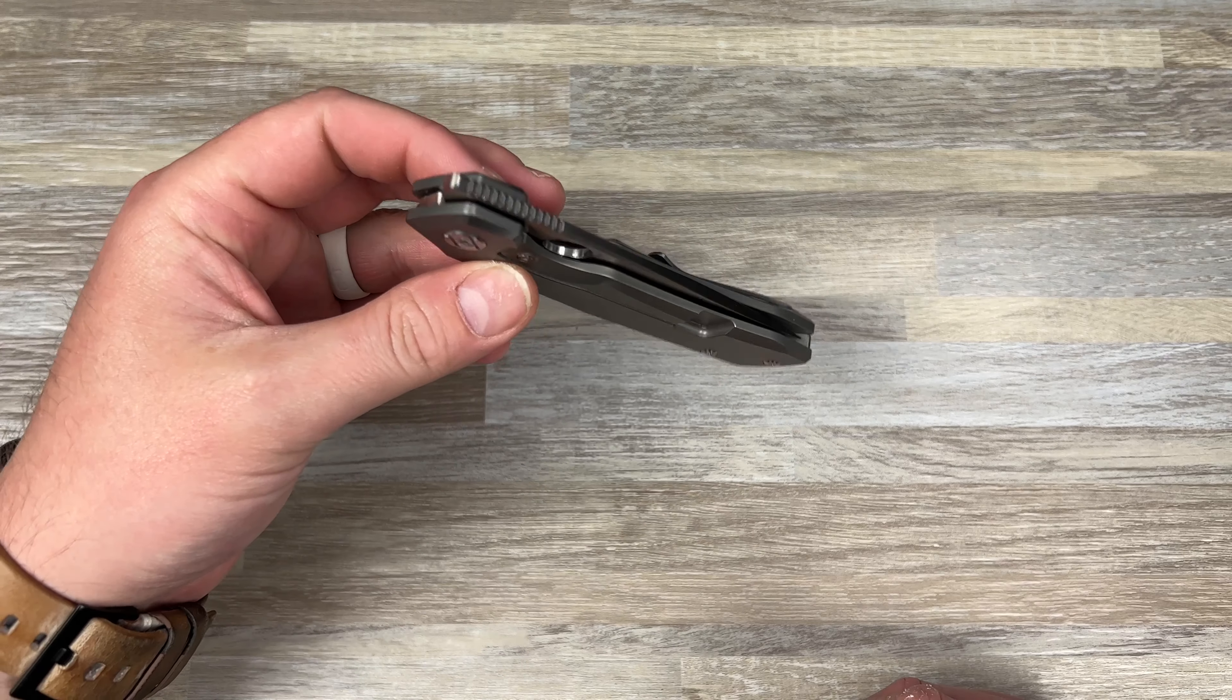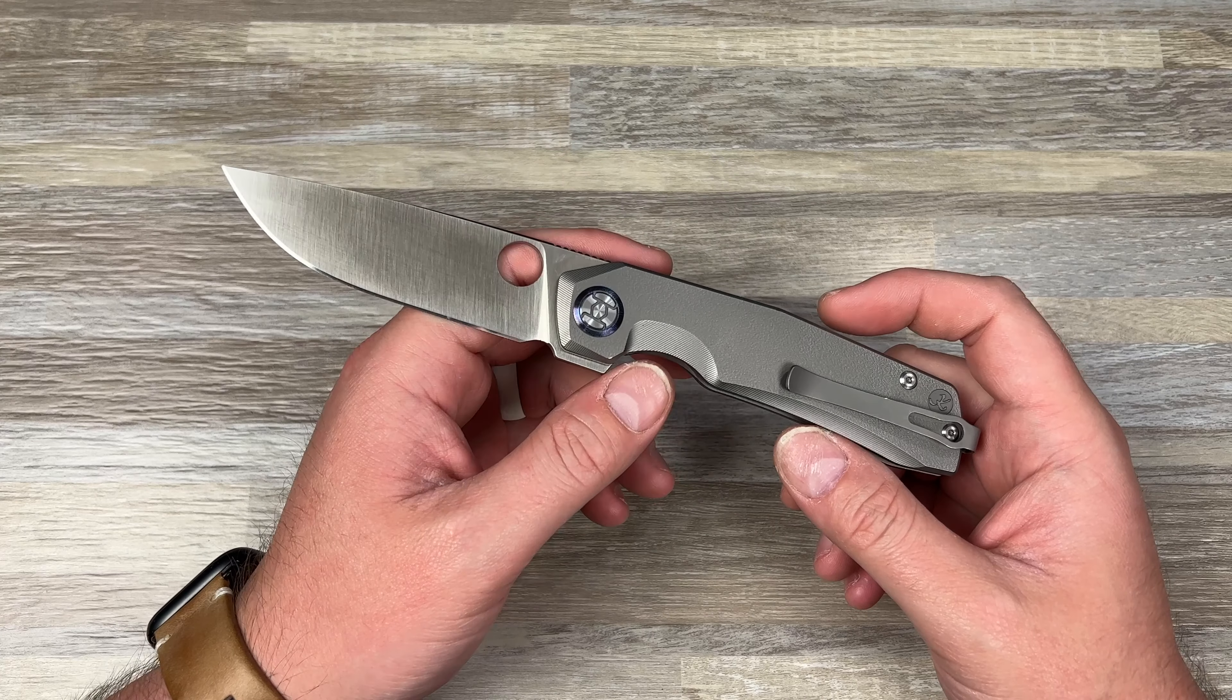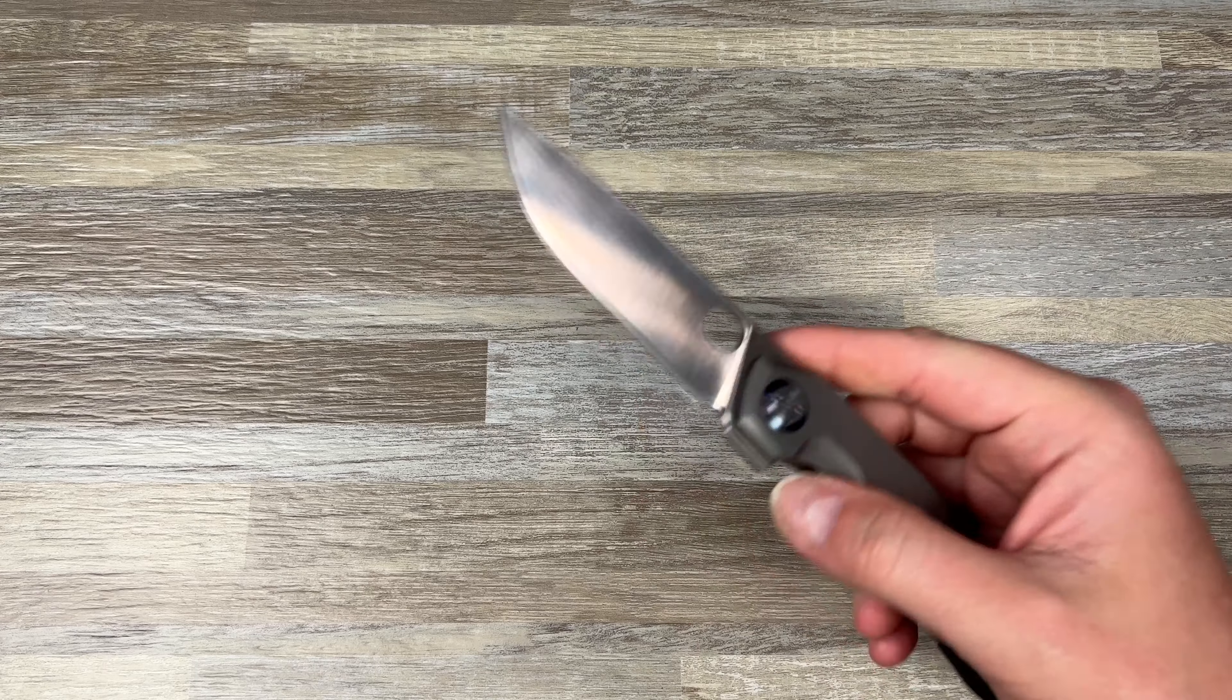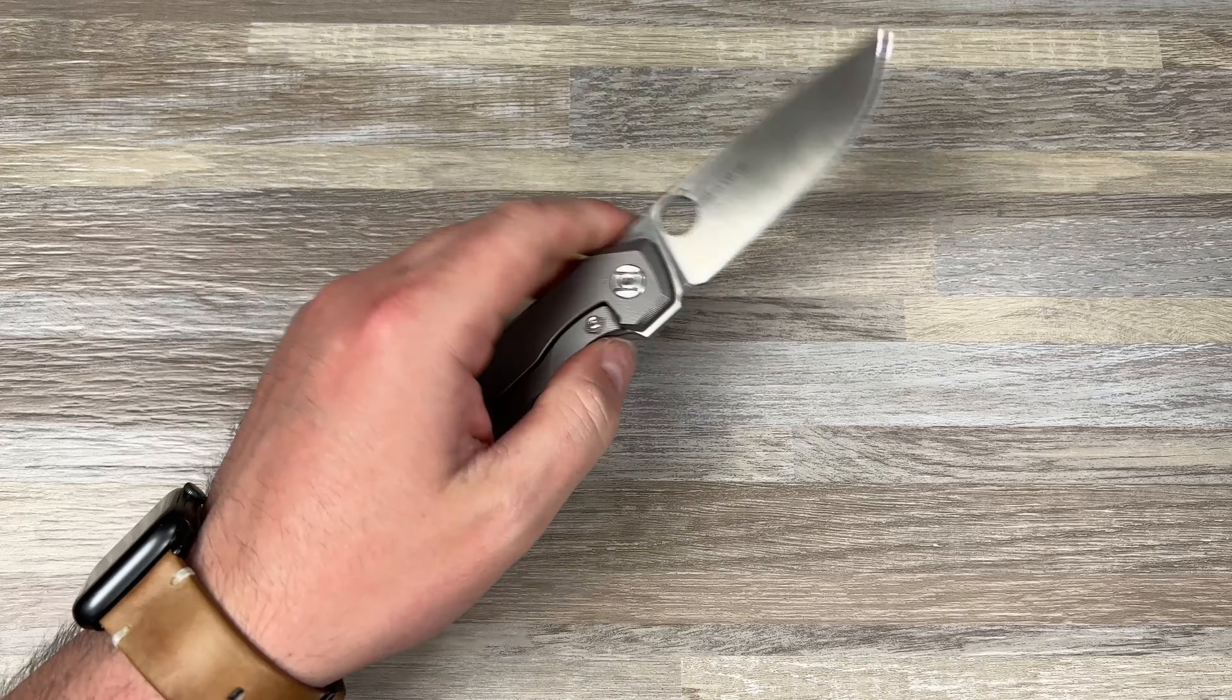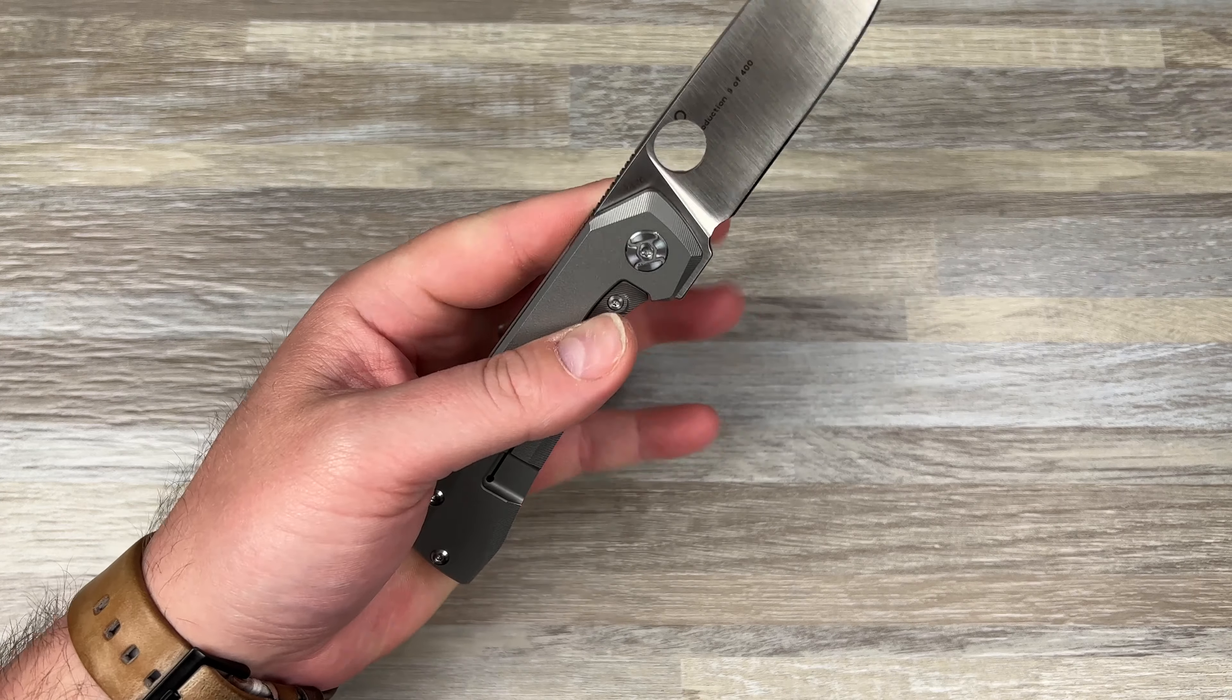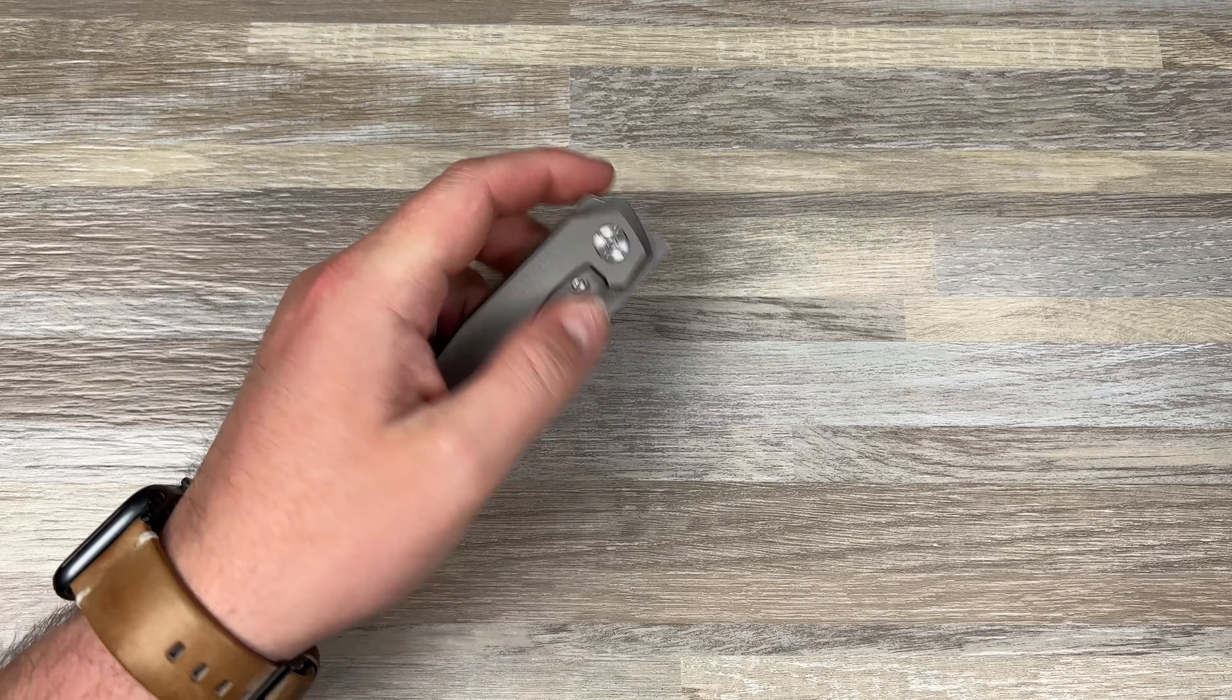Some of you may know how to do that already, so you might be able to do this at home. I believe he uses a Dremel and a drill press or something like that, so it could be fairly easy if you know what you're doing. That's literally the only difference on this knife, but it makes it so you can reverse flick the knife really easy.